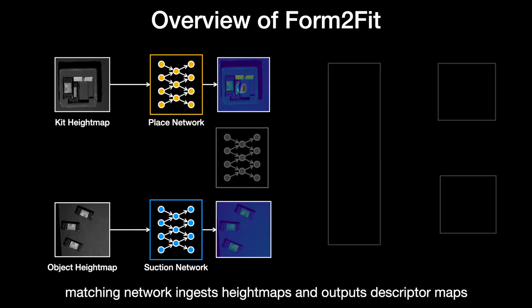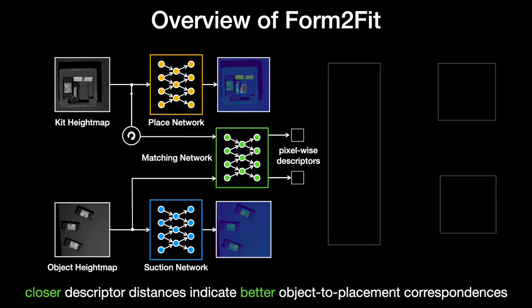This is where the matching module comes in. It consists of a two-stream fully convolutional neural network whose goal is to map each pixel in the kit and object height map to a d-dimensional descriptor space where closer embedding distances indicate better object placement correspondences. To do this, the matching module first ingests the object height map and produces a dense object descriptor map. Then it takes the kit height map and rotates it 20 times to account for 20 different rotations, embedding each rotated height map into the same descriptor space.